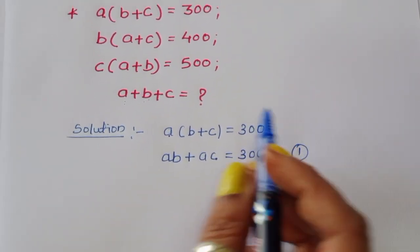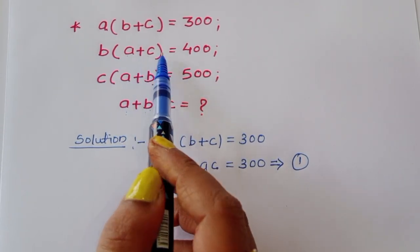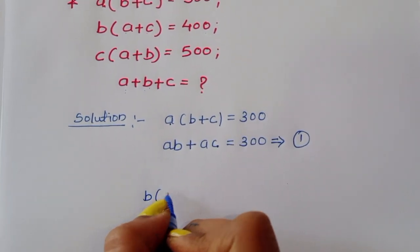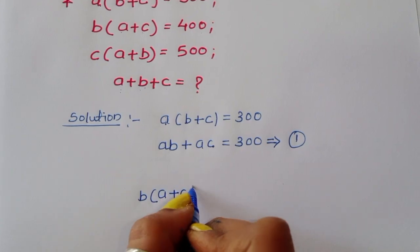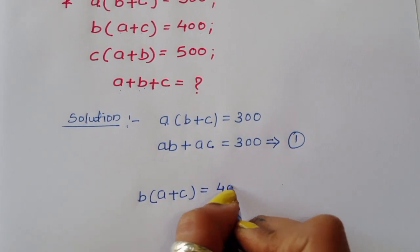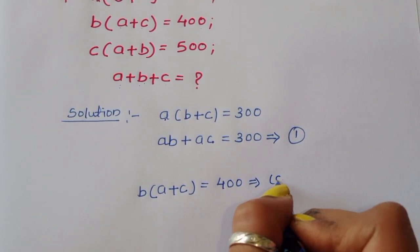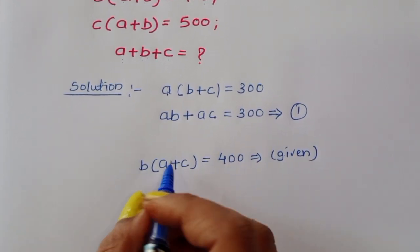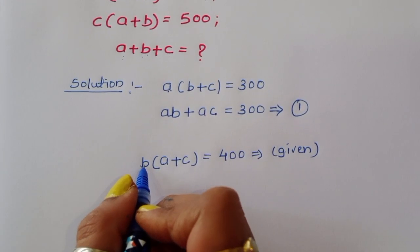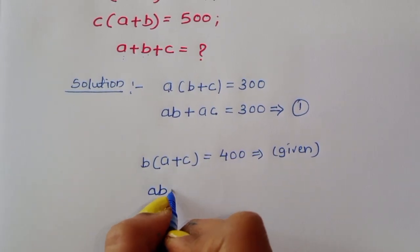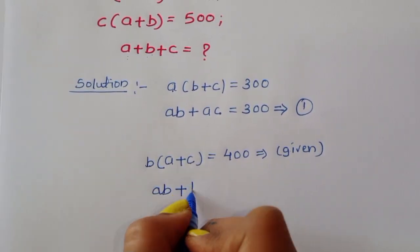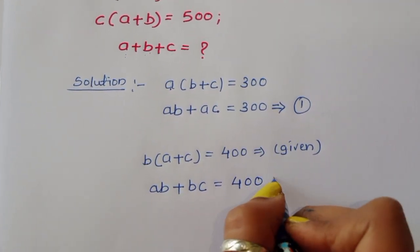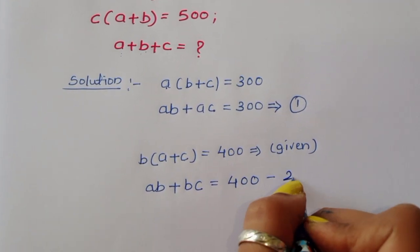Next, B times (A plus C) is equal to 400. Multiplying out, AB plus BC is equal to 400. This is equation number 2.